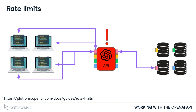API rate limits are another key consideration for companies building features on the OpenAI API. Rate limits are a cap on the frequency and size of API requests. They are put in place to ensure fair access to the API, prevent misuse, and manage the infrastructure that supports the API.